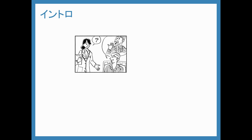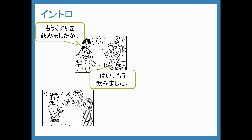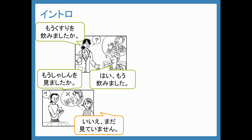I'm going to talk about another new grammar point today. Let's take a look at this scenario: ima byouin ni imasu, o-isha-san ga imasu — a doctor. And she will ask: mo kusuri wo nomimashita ka? And I can say: hai, mo nomimashita. Or my friend might come over and I can ask: mo shashin wo mimashita ka? Iie, mada mite imasen.